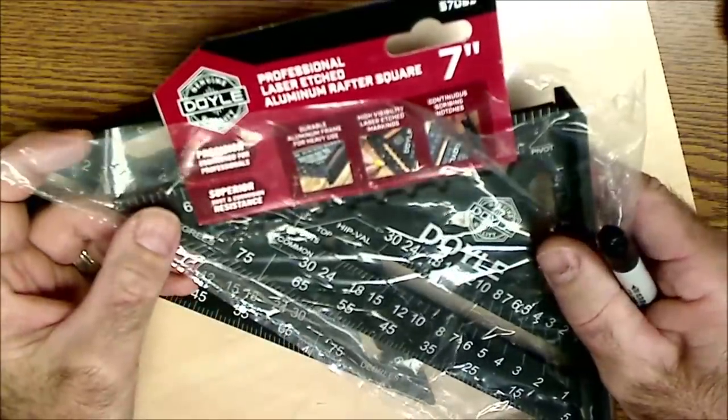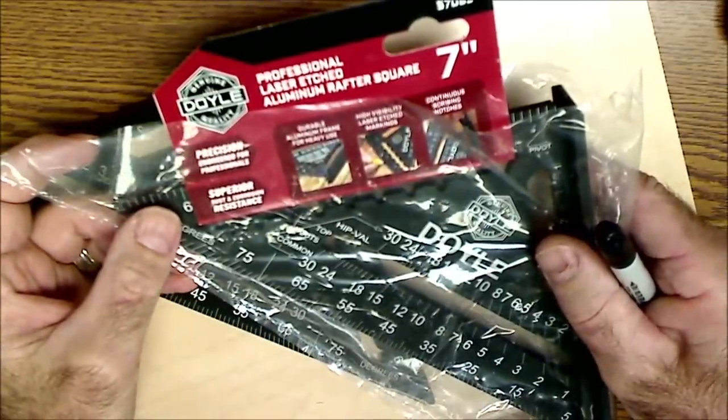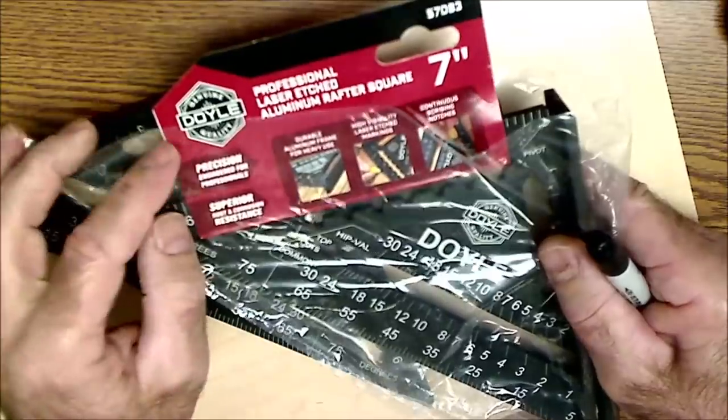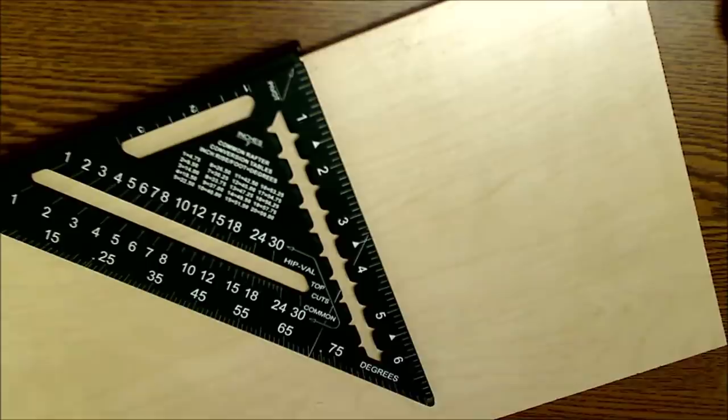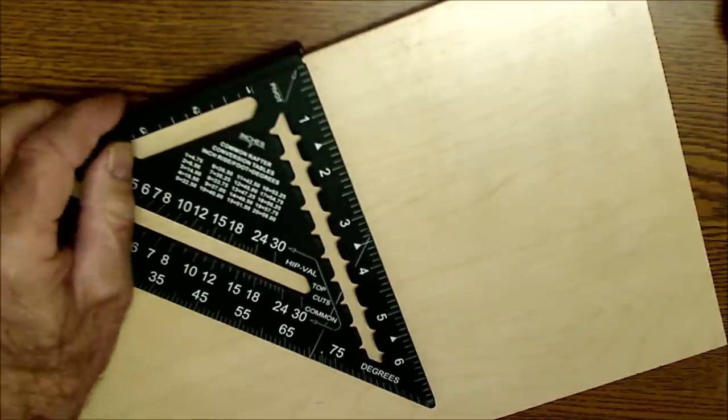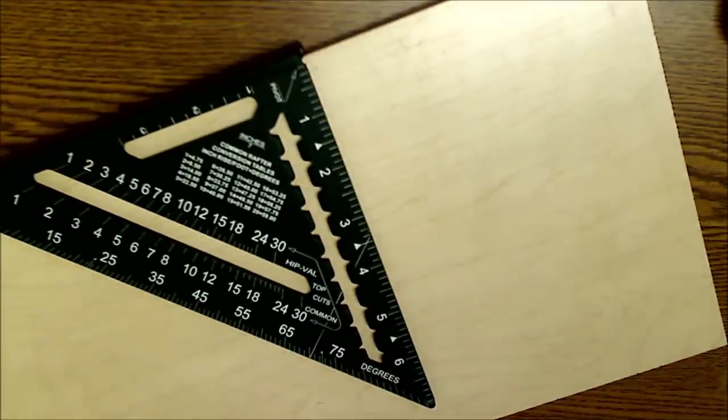This is a professional laser etched aluminum rafting square, seven inches. It is made by Doyle and I got this at Harbor Freight. You need to have this in your bags on the job site wherever you go in the wood industry, and you need to know how to use it.